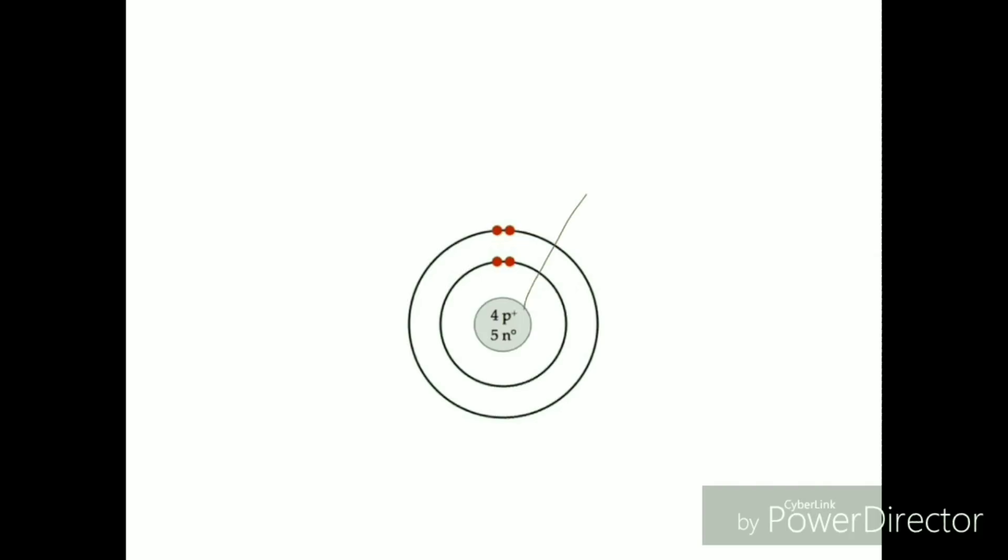Because there are four protons, this is beryllium. The mass number is nine. The electron configuration is two dash two. This atom has no charge because the protons equal the electron.